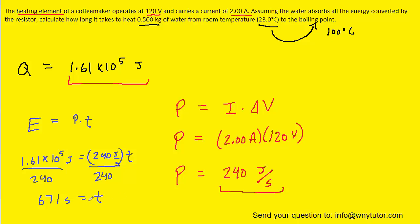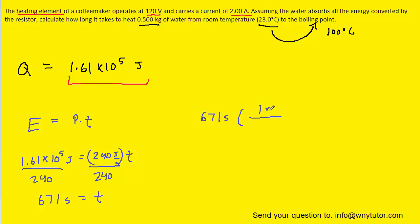If the question asks for minutes rather than seconds, we can perform a simple conversion. Since one minute equals 60 seconds, we multiply by that conversion factor and the seconds cancel, leaving us with 11.2 minutes. So the final answer is 671 seconds or 11.2 minutes, depending on the units requested.